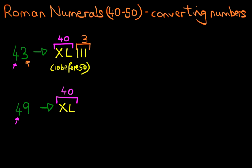That is 40. And the XL is the same as above, 10 before 50. Now how about the units? How many units are there? There are nine. How do we write nine down? Well, you know this. It is one before 10. So one before 10 is IX.